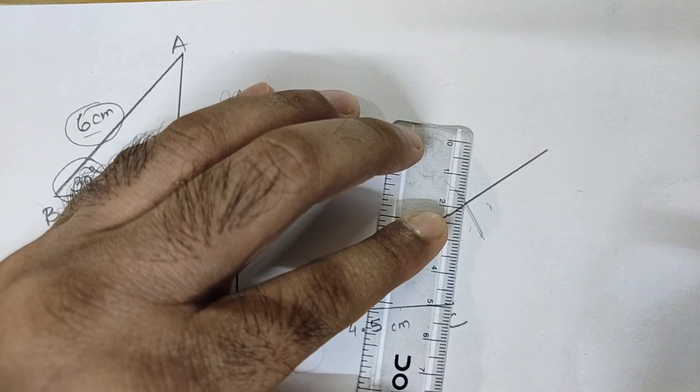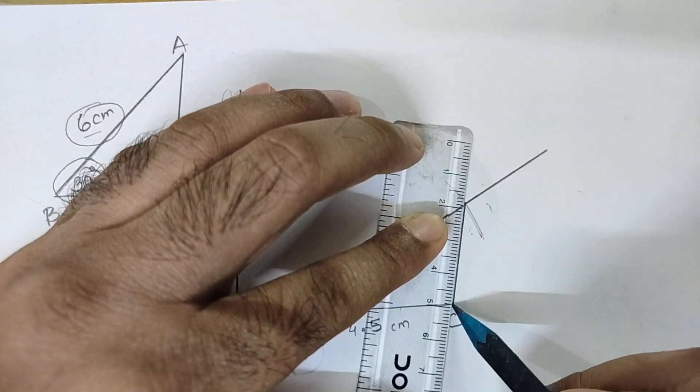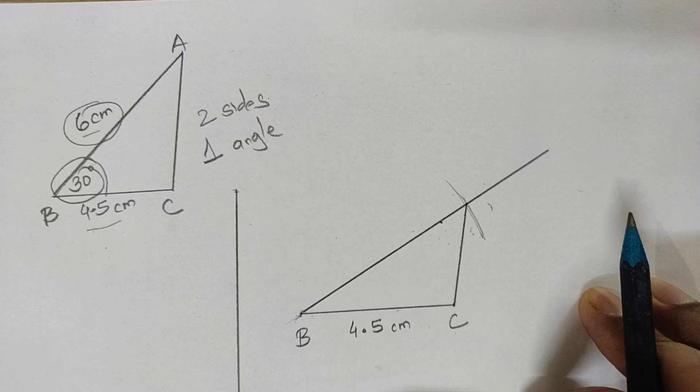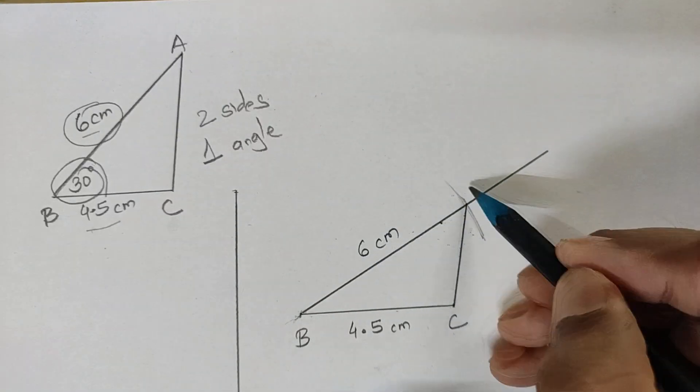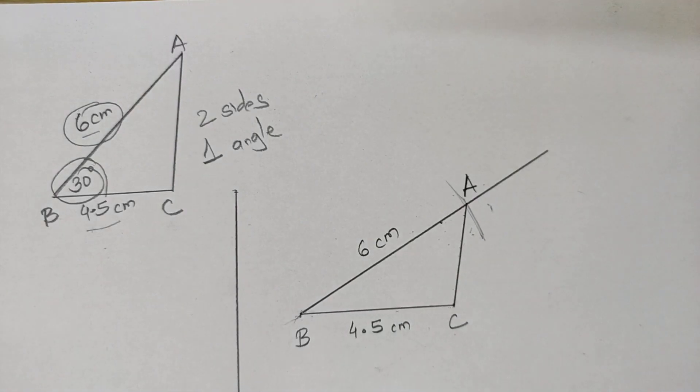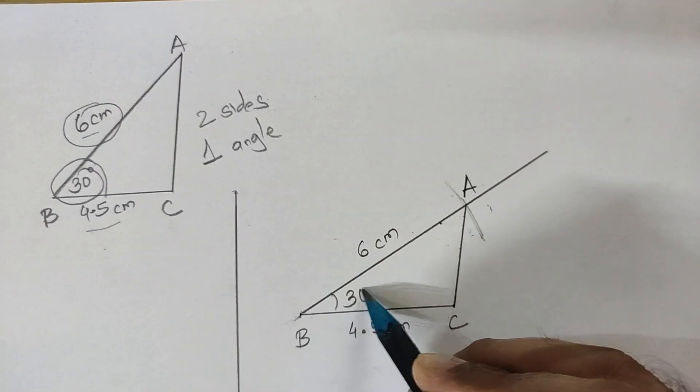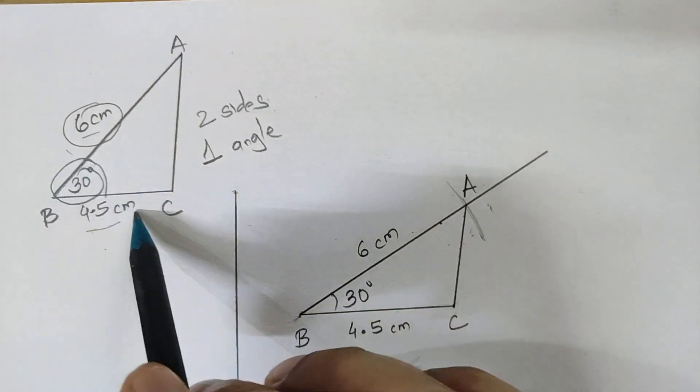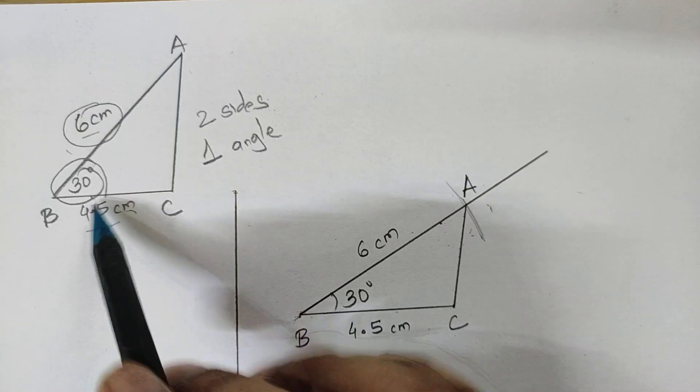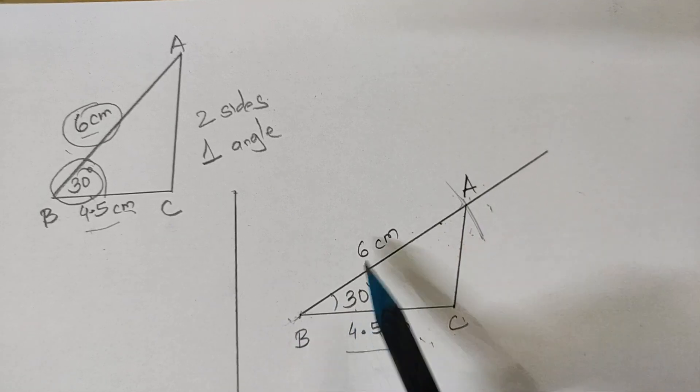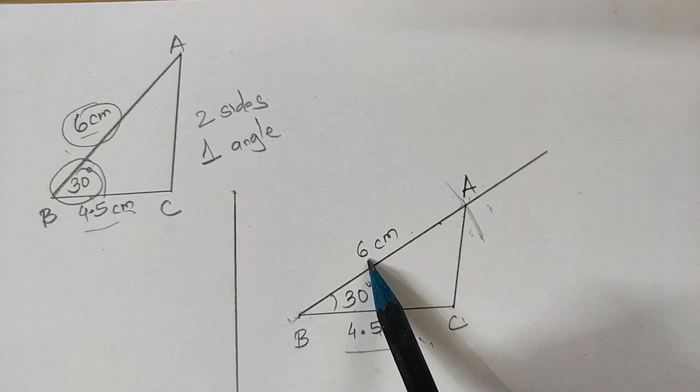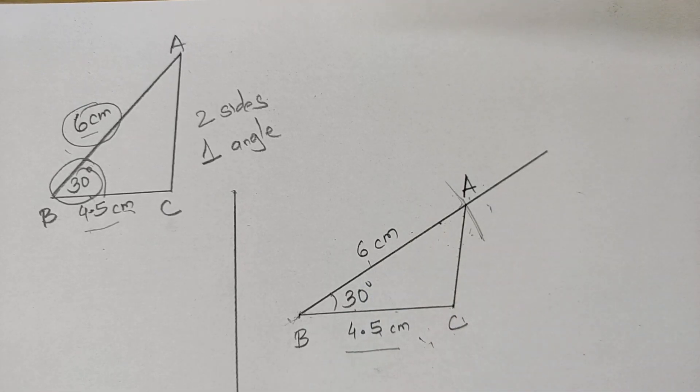Draw these two points and the triangle is ready. Do not forget to label it. This length is six centimeters, this is A. So as per the given measurements—six centimeters, four point five centimeters, thirty degrees—we have drawn a triangle named ABC with the base four point five, angle thirty degrees, and the other side six centimeters. Thank you.